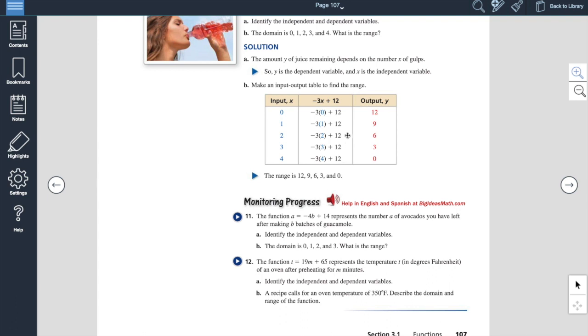So your range for this, your output would be the 12, 9, 6, 3, and 0. Your input or your domain is 0, 1, 2, 3, and 4. So again, they give you two really nice examples here with how many avocados you'd have left after you make B number of batches of guacamole. We did look at these, this was in class, obviously a long time ago, but these are really key type of problems to be able to do. So please check out those monitoring progress problems.